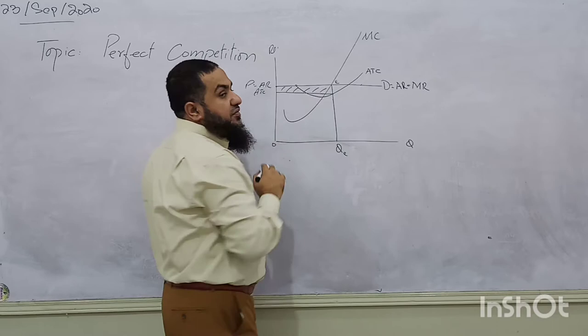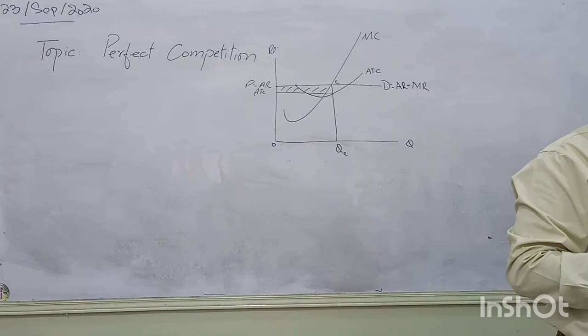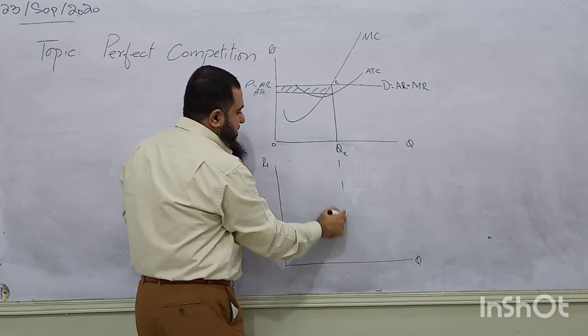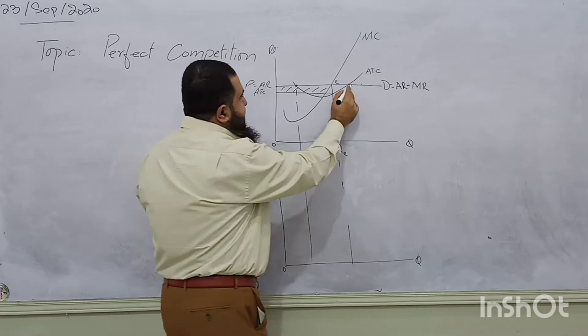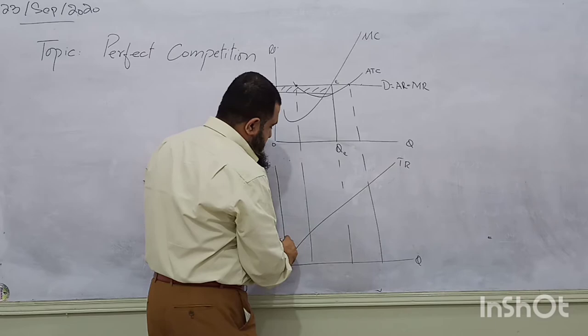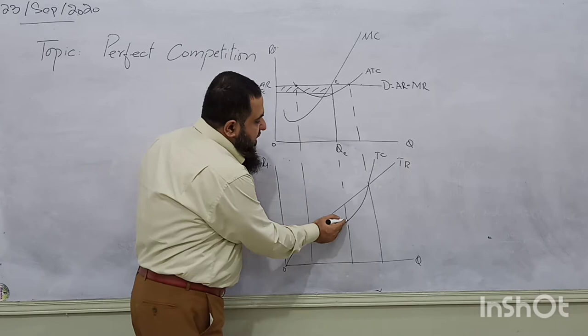Can anyone draw a diagram of total revenue and total cost to show this supernormal profit? In the total revenue and total cost diagram, we find the profit-maximizing point where average cost and average revenue are both equal at the break-even points. When the firm is a price taker, total revenue lies above total cost, and the gap between them is maximized where marginal revenue equals marginal cost.